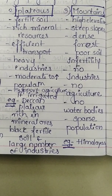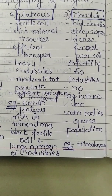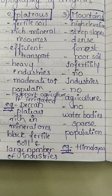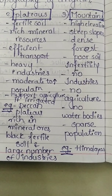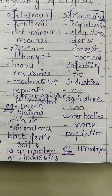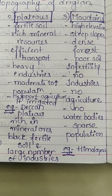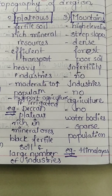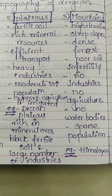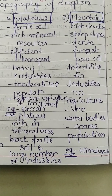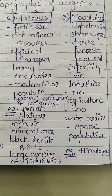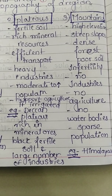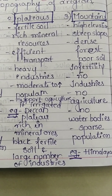After the plains, we come to the topic of plateaus. The plateaus are flat elevated landforms that rise above the surrounding area. If the surrounding area is relatively flat and some elevation is created, that elevated landform is known as a plateau.